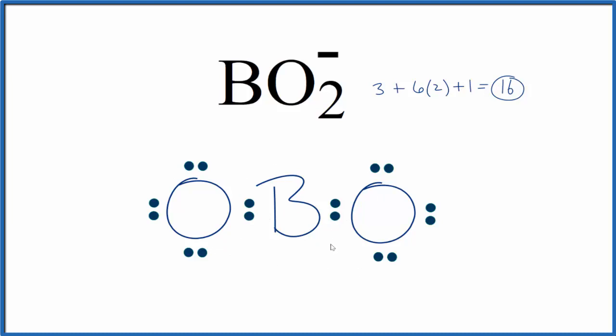Often, boron only needs six. So what we can do is if we move a pair of electrons here between this oxygen and this boron here, now the oxygen has eight, the boron has six, and this oxygen has eight.